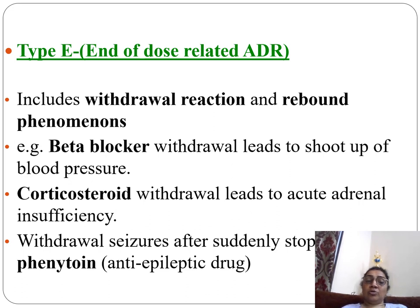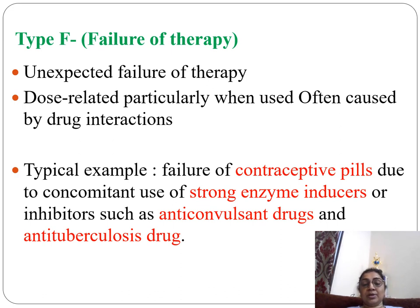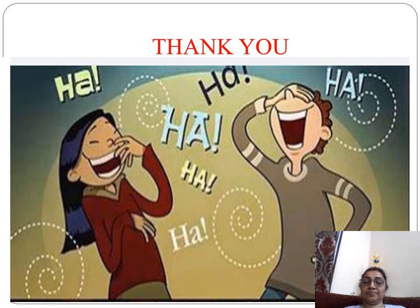Type F is unexpected failure of therapy. It is dose-related and particularly common when caused by drug interactions. A typical example is failure of contraceptive pills due to concomitant use of a strong enzyme inducer such as anti-tubercular drugs or anti-convulsant drugs, which increase the metabolism of contraceptive pills and decrease their efficacy, leading to failure of contraception.